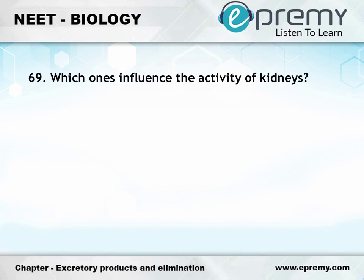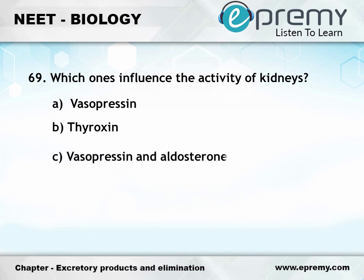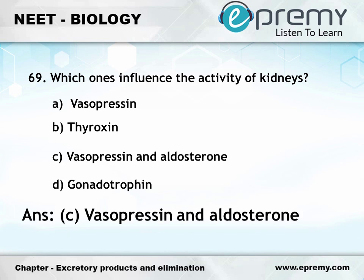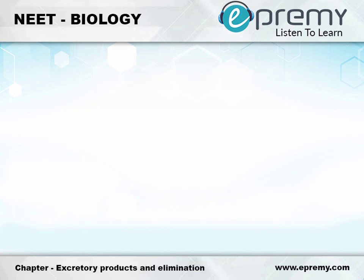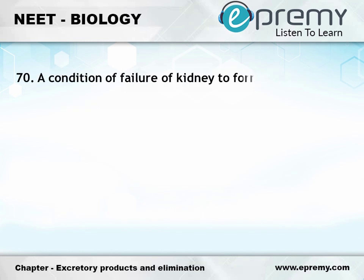Question number 69: Which ones influence the activity of kidneys? Option A: Vasopressin, Option B: Thyroxin, Option C: Vasopressin and Aldosterone, Option D: Gonadotropin. The answer is Option C: Vasopressin and Aldosterone.